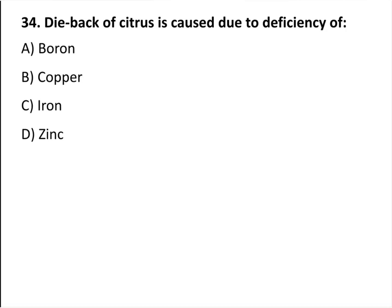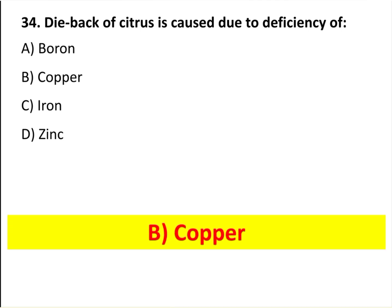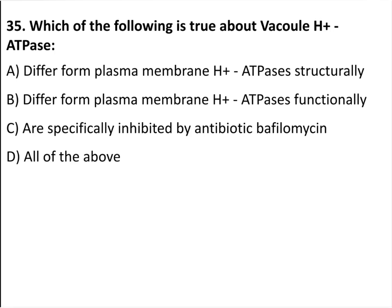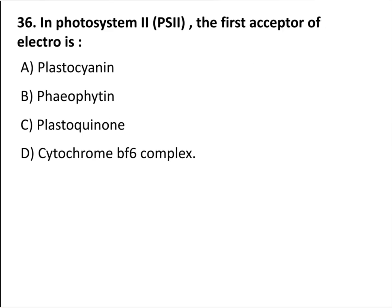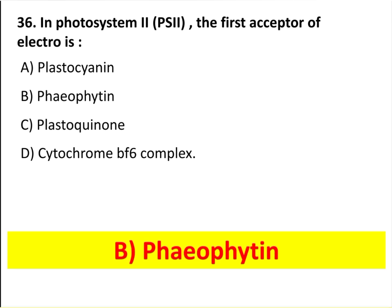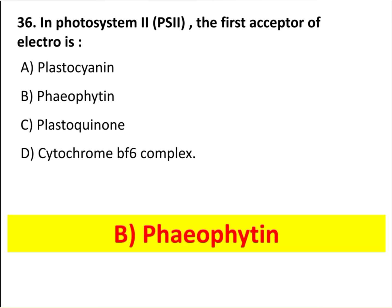Dieback of citrus is caused due to the deficiency of copper. Which of the following is true about vacuolar H⁺-ATPase? All of the above. In photosystem II, the first acceptor of electron is pheophytin.